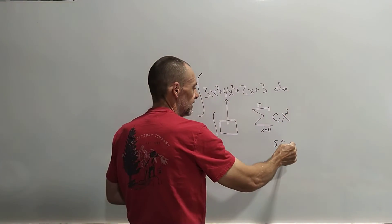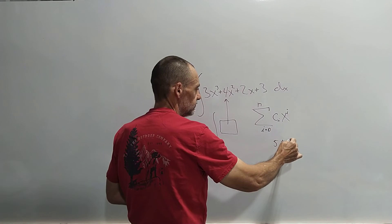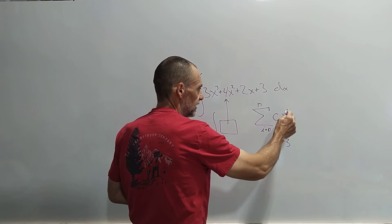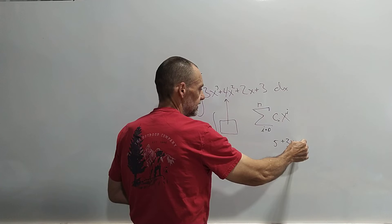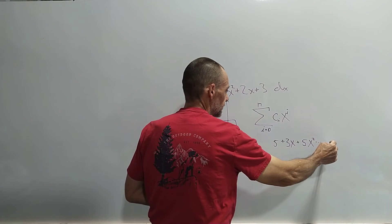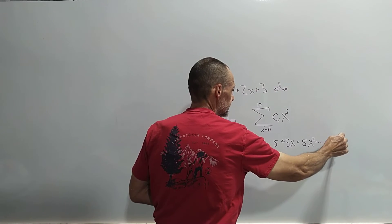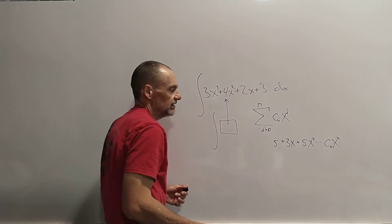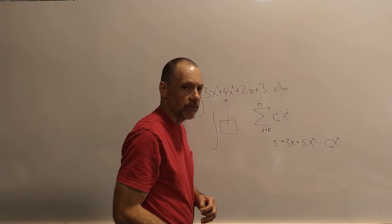And then we would have c sub 2, which might be 3. And then we would have x, and then we would have on and on, up to c sub n, x sub n. But you can see that this is just a polynomial, right?